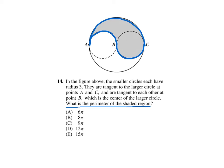Now in the problem, they tell us that the smaller circles have radius 3. So this length would be 3, and let's go ahead and label the diameter of the smaller circle, which is the radius of the larger circle, as 6.